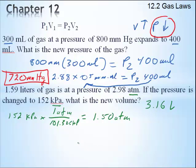So let's now plug in these numbers. I've got 2.98 atm's, and I had 1.59 liters. And that equals a pressure of 1.50 atm times V2.